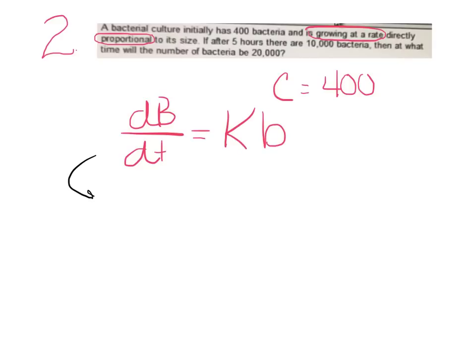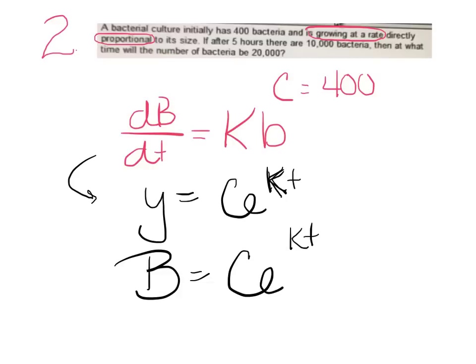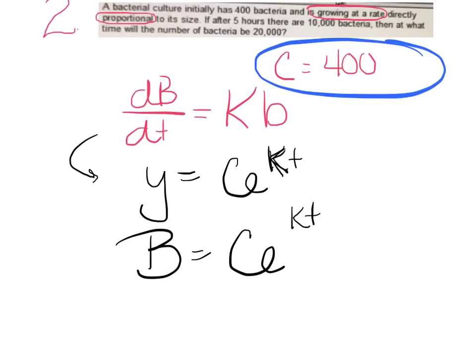Again, this always changes into y equals Ce^(kt). It's a million times easier to memorize that than to separate the variables and integrate. I'm just going to throw this as B equals Ce^(kt) instead of y. Remember, we know the initial amount, and that is your c value. So I can substitute that in right off the bat. So I have B equals 400e^(kt).